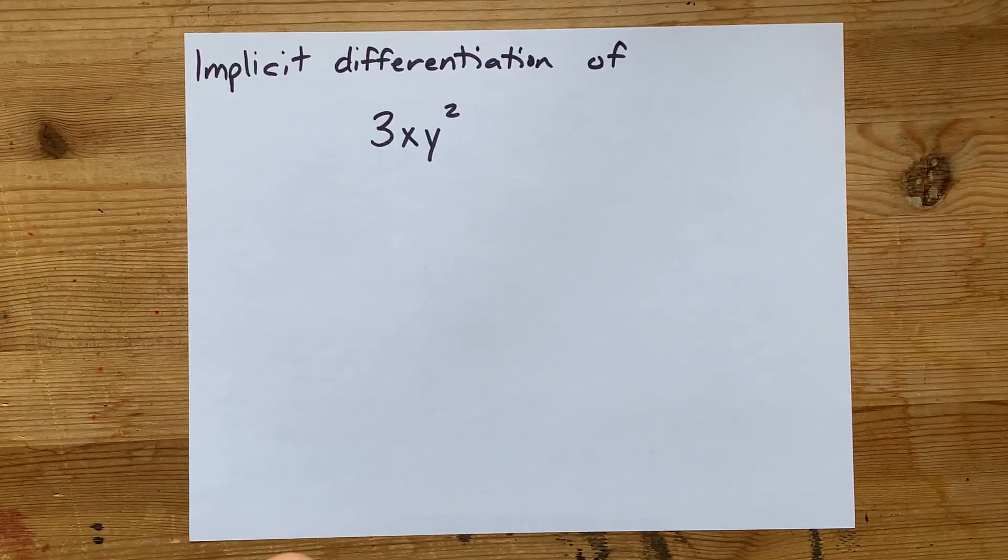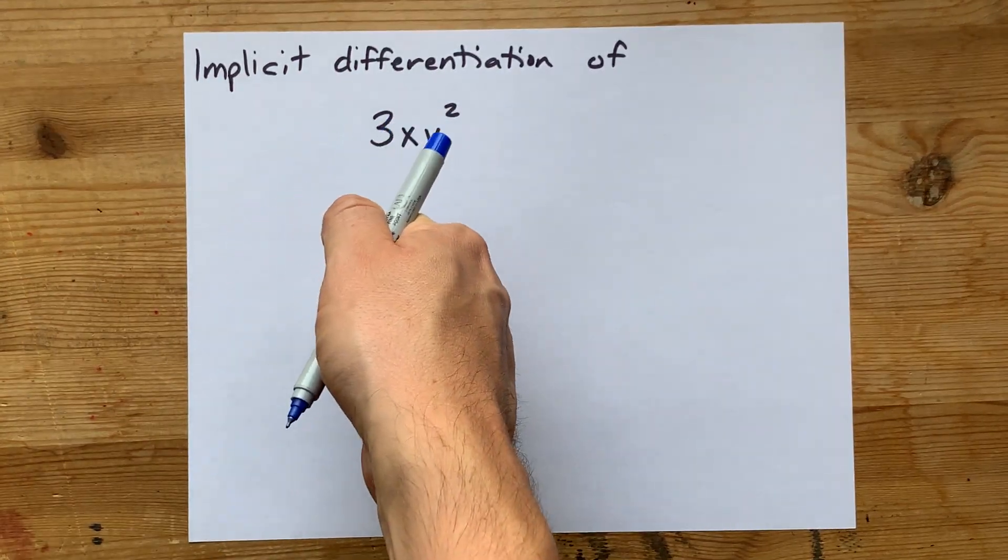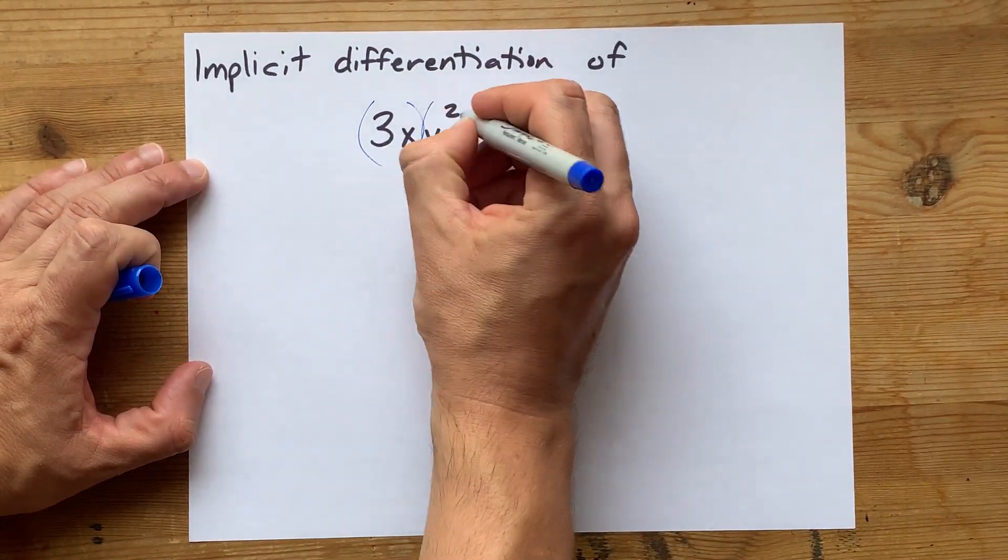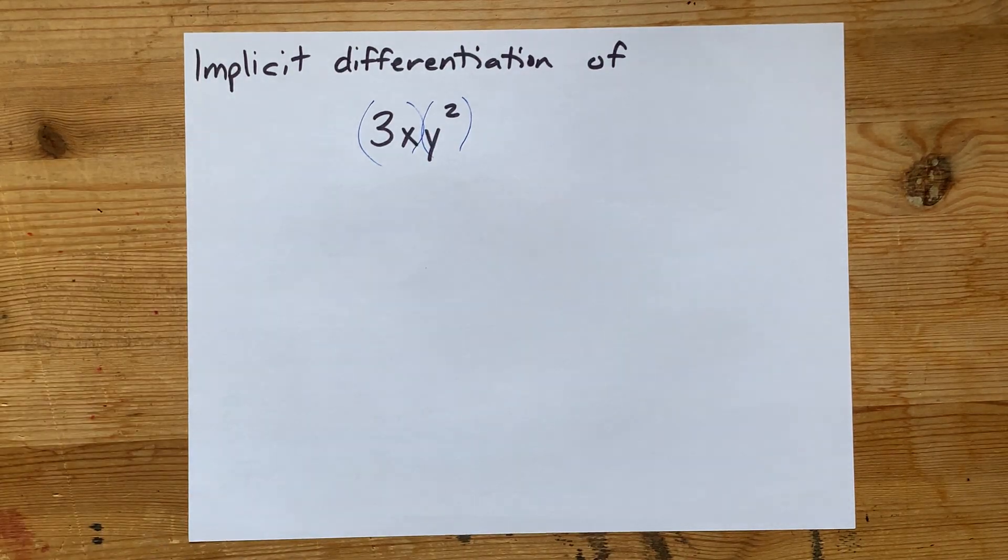We're going to do implicit differentiation of the term 3xy squared. I'm going to treat 3x as my first term and y squared as my second term.